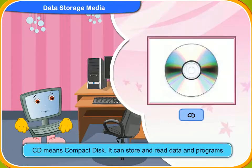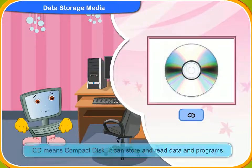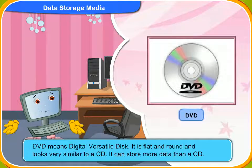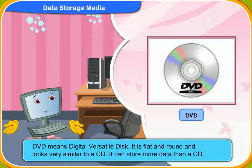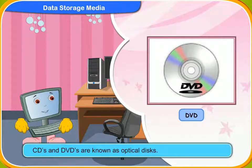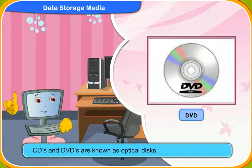I know that CD means compact disc. It can store and read data and programs. And what are DVDs? DVD means digital versatile disc. It is flat and round and looks very similar to a CD. It can store more data than a CD. CDs and DVDs are known as optical disks.